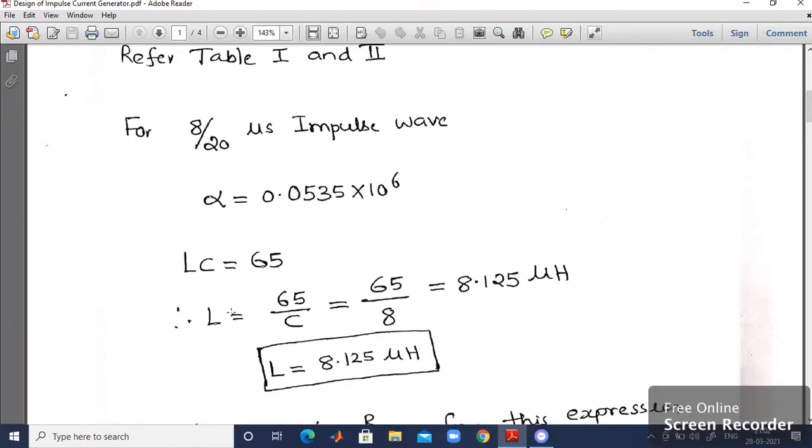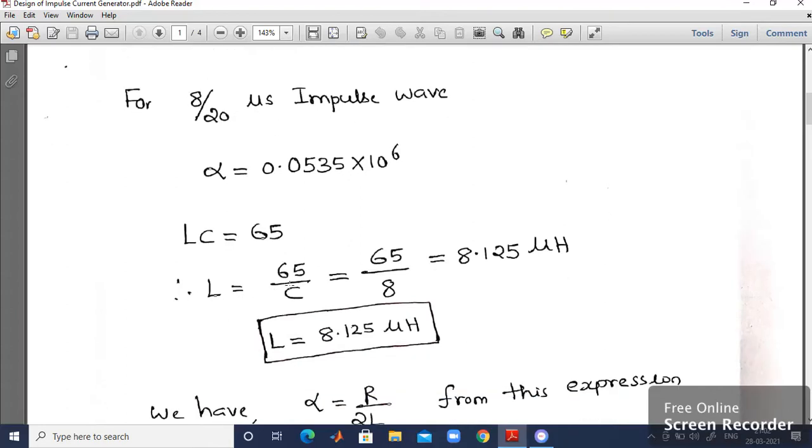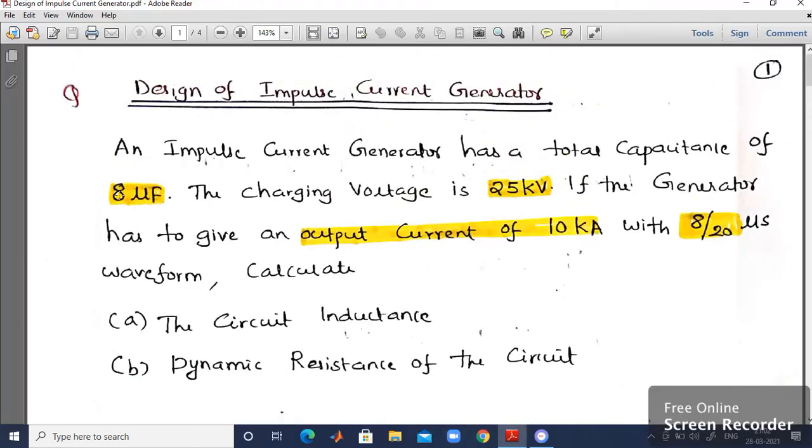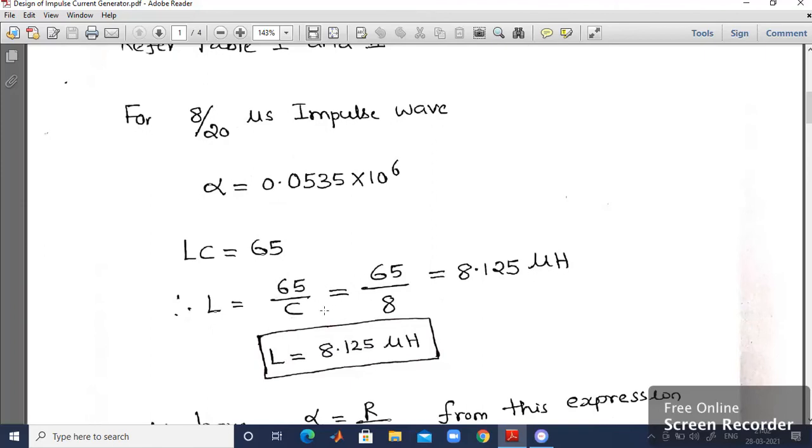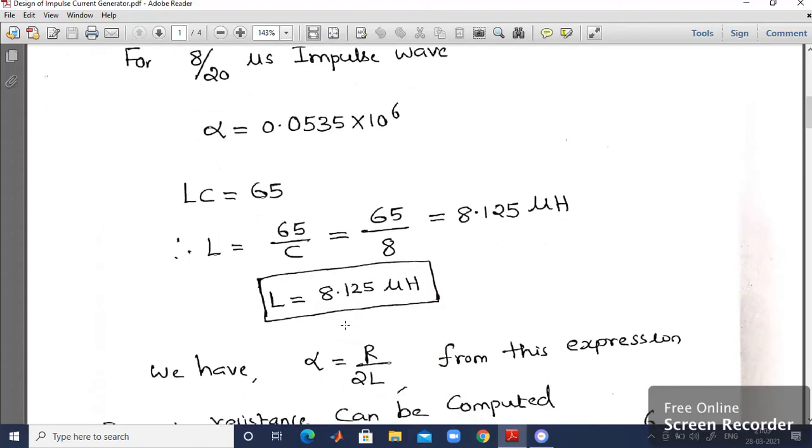LC is equal to 65. Therefore, I will be getting the value of L. That is equal to 65 divided by C. So what is the value of C? C value is given by 8µF. So directly you substitute the value of C over here. Then I will be getting the value of L is equal to 8.125 microhenry. So the design value of L is given by 8.125 microhenry.